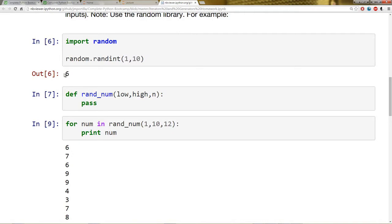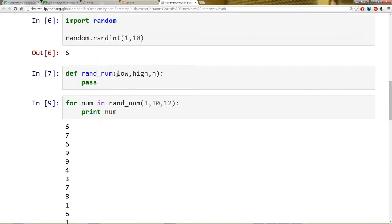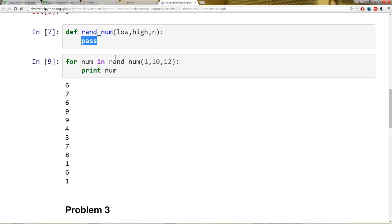And then you can use random.randint with two numbers, a low and a high, and it'll output a number, a random number between the low and the high. So that's what I want you to use in this function.